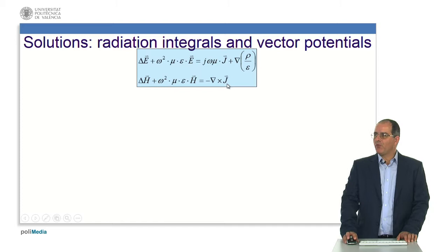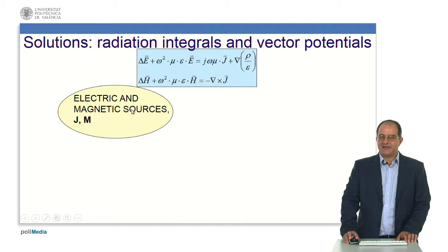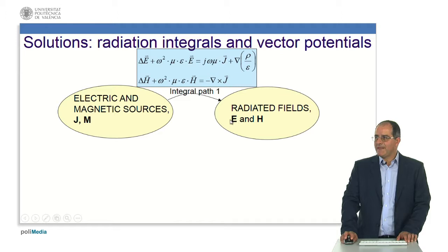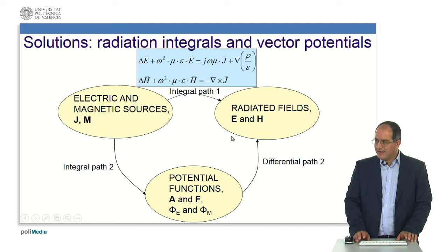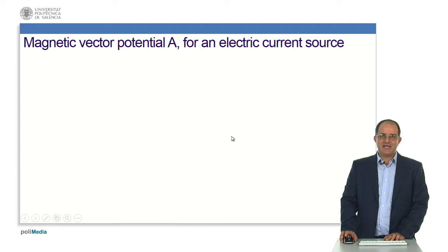I also remind that our goal is to solve this set of equations. We can do so in a direct way departing from the electric and magnetic sources, or I can go through this set of auxiliary tools defined before — through a set of auxiliary potential functions A and F and phi_e and phi_m — and finally reach the electric and magnetic fields E and H through a differential path.